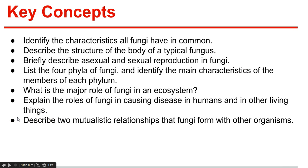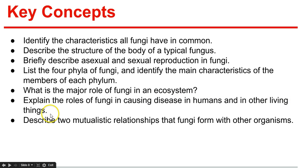Key concepts: identify the characteristics all fungi have in common; describe the structure of the body of a typical fungus; describe asexual and sexual reproduction in fungi; list the four phyla of fungi and identify the main characteristics of each; explain the major role of fungi in an ecosystem; explain the roles of fungi in causing disease; and describe two mutual relationships that fungi form with other organisms. That's it for Chapter 21.